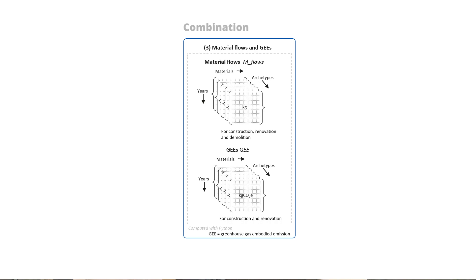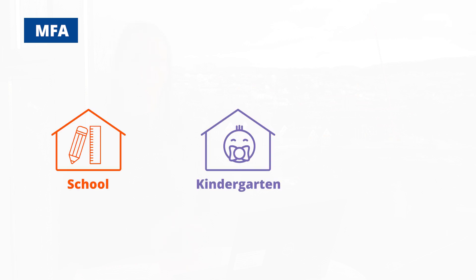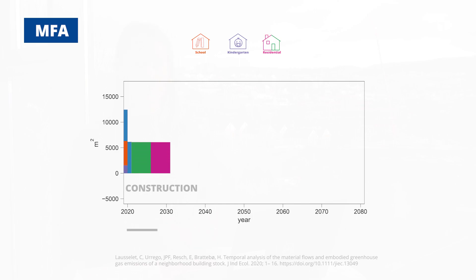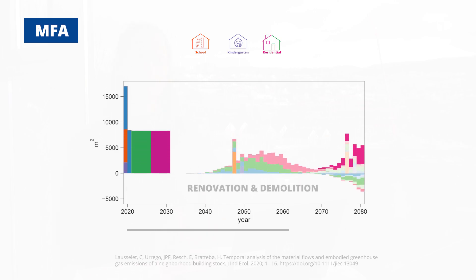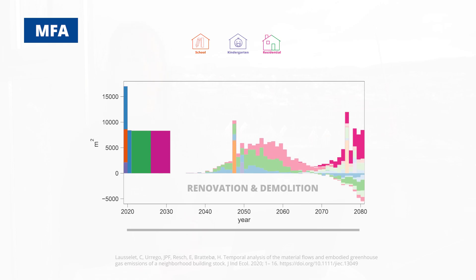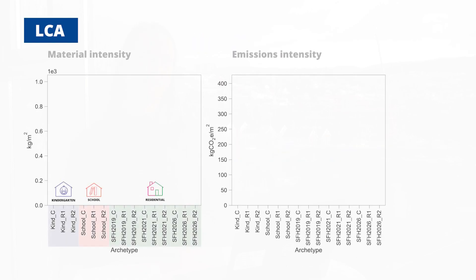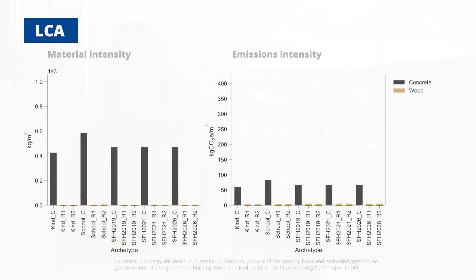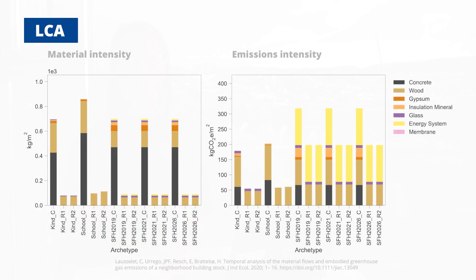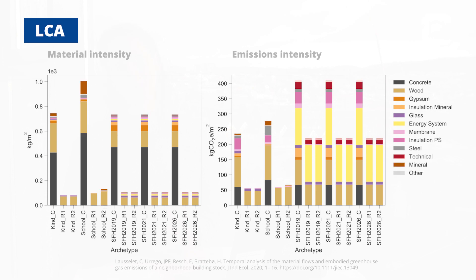In the MFA part, we want to build our stock of buildings — it's a school, a kindergarten, and a residential part. We want to construct it in the first 11 years, and then maintain it over the years. We then use LCA to associate material use, but also emission intensity, to those material flows.